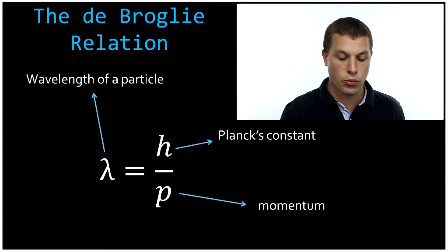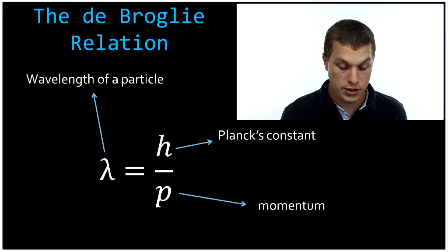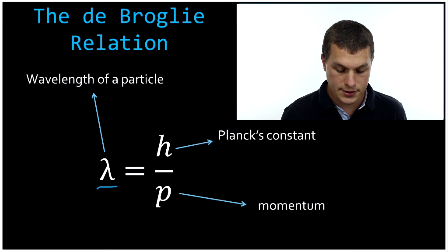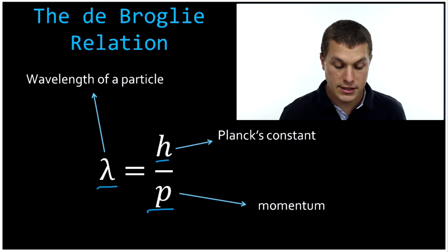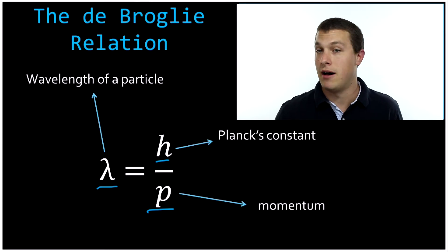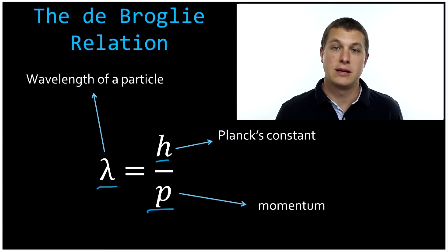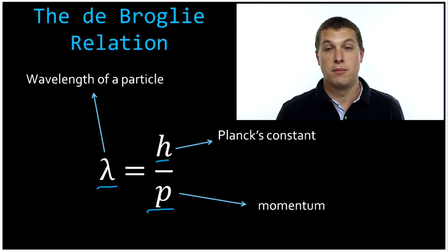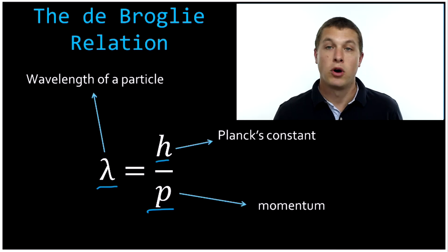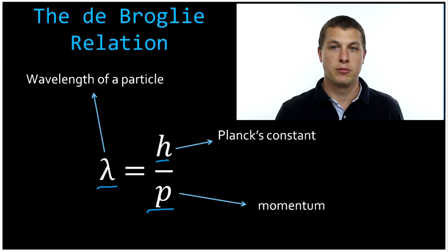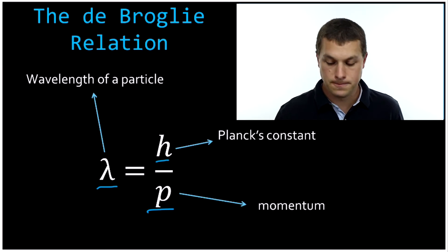The de Broglie relationship tells us that the wavelength of a particle — which we use lambda as the symbol, just like for light — is equal to Planck's constant divided by the momentum of that particle. And you recall that momentum can be calculated by the mass times the velocity of something. So lots of times when you're doing these calculations, you'll take the mass of an object, multiply by the velocity to get the momentum, and then calculate the de Broglie wavelength.